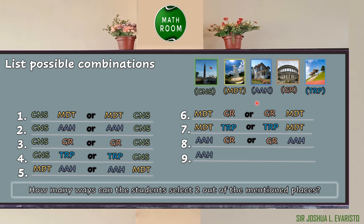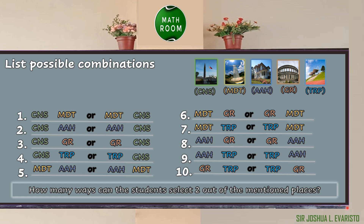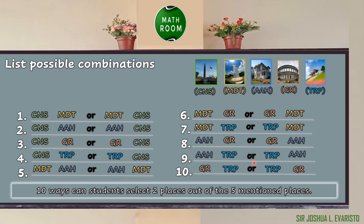Our ninth combination is Aquino Ancestral Home followed by Tarlac Recreational Park, or Tarlac Recreational Park followed by Aquino Ancestral Home. For our last combination, we have Goshen Resort followed by Tarlac Recreational Park, or Tarlac Recreational Park followed by Goshen Resort. By listing all the possible combinations, we have ten ways the students can select two places out of the five mentioned places.